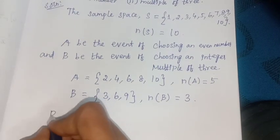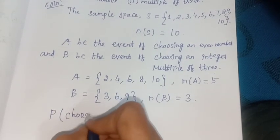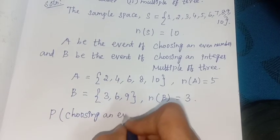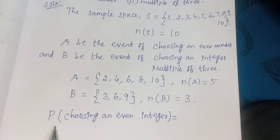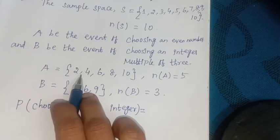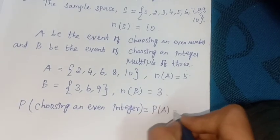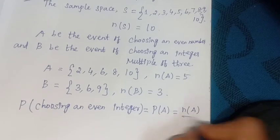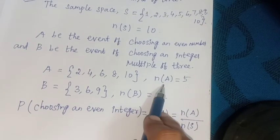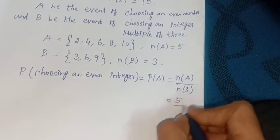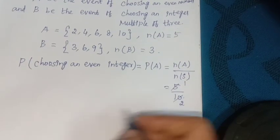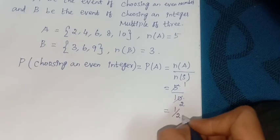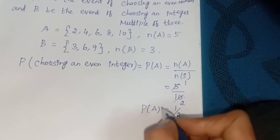Probability of choosing an even integer: P(A) equals n(A) divided by n(S), which equals 5 divided by 10, equals 1/2. So P(A) equals 1/2.